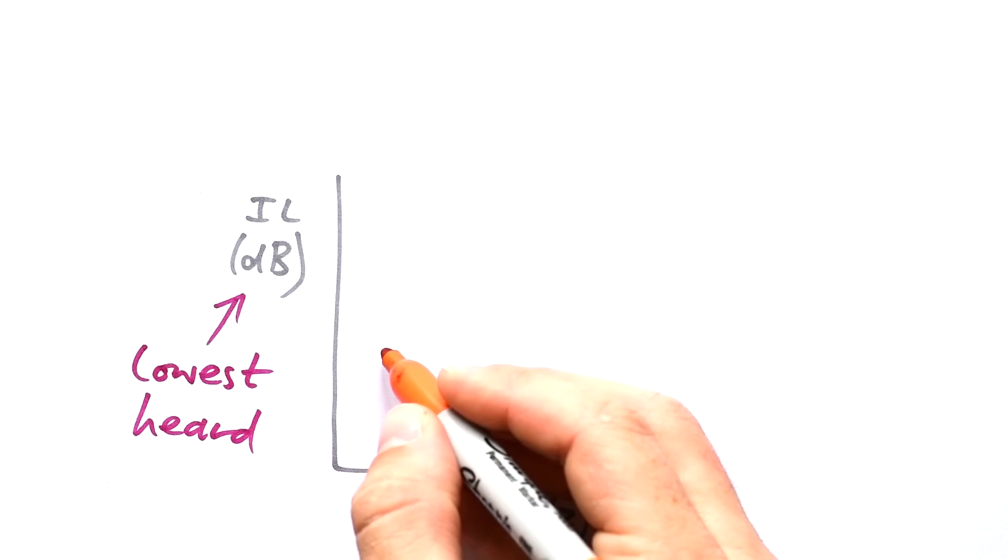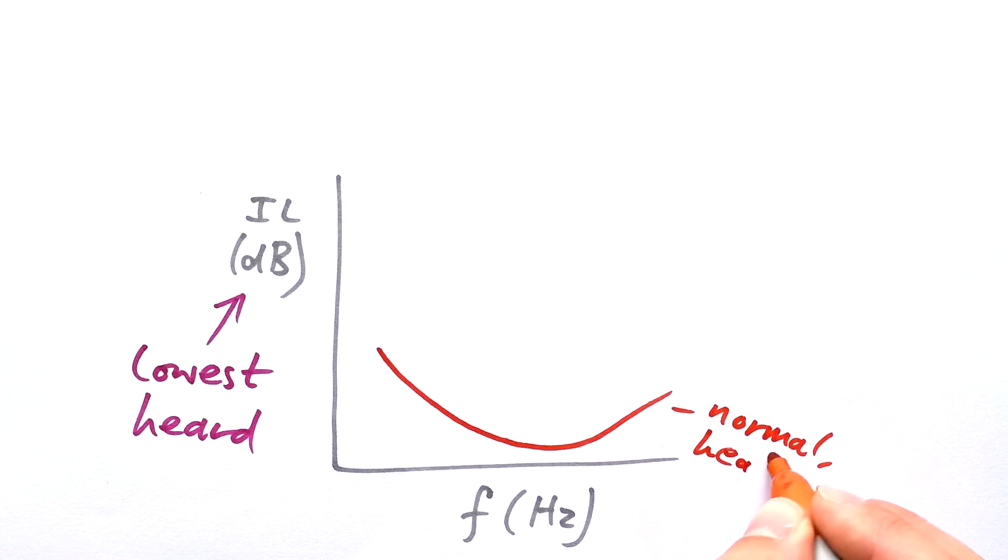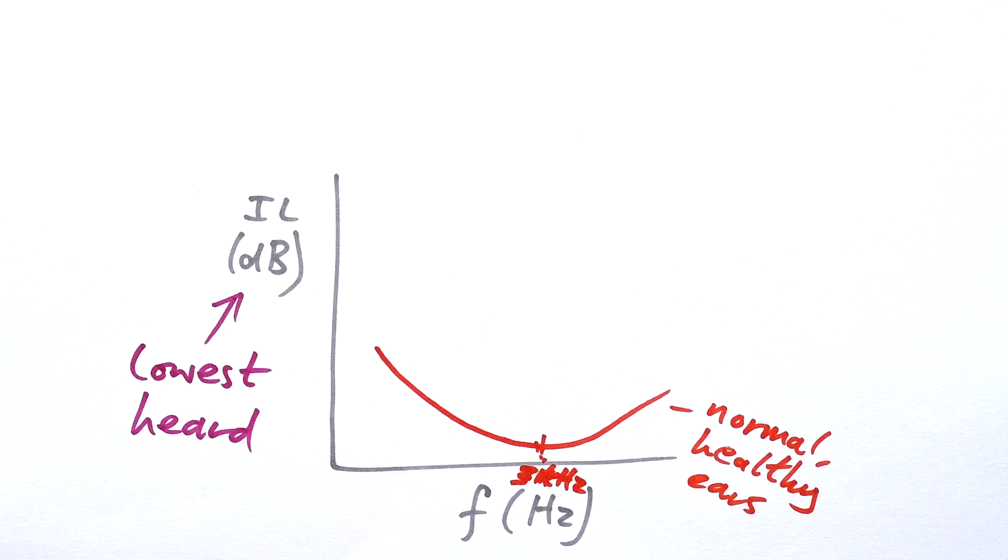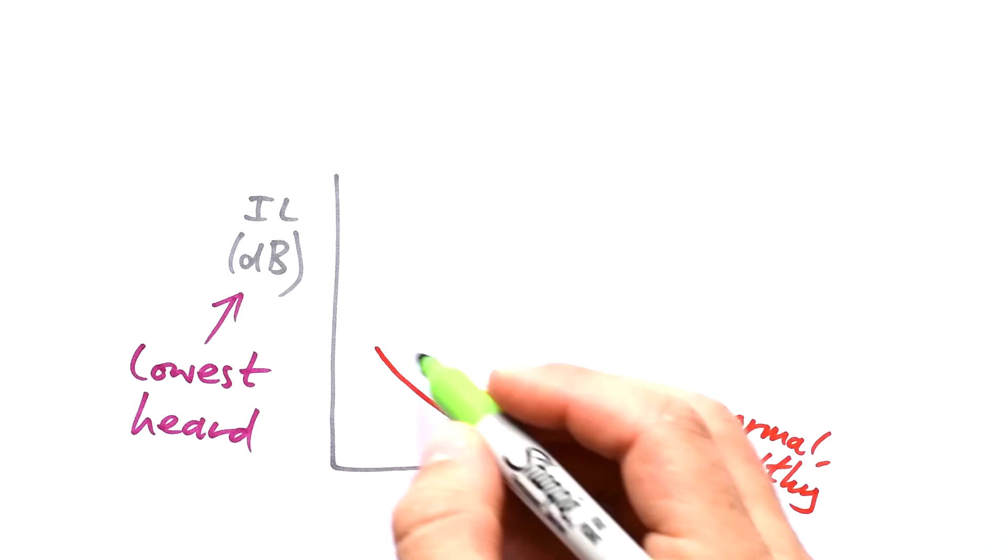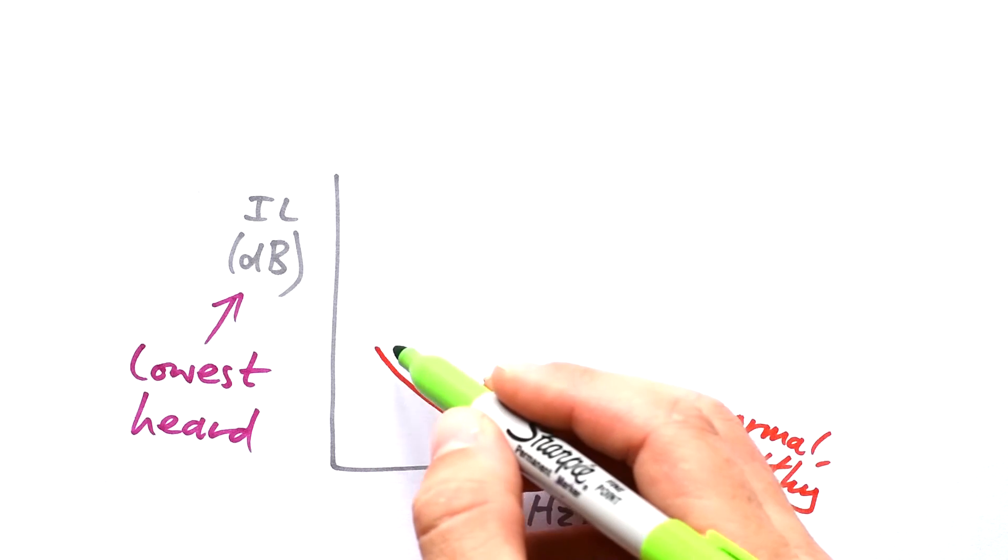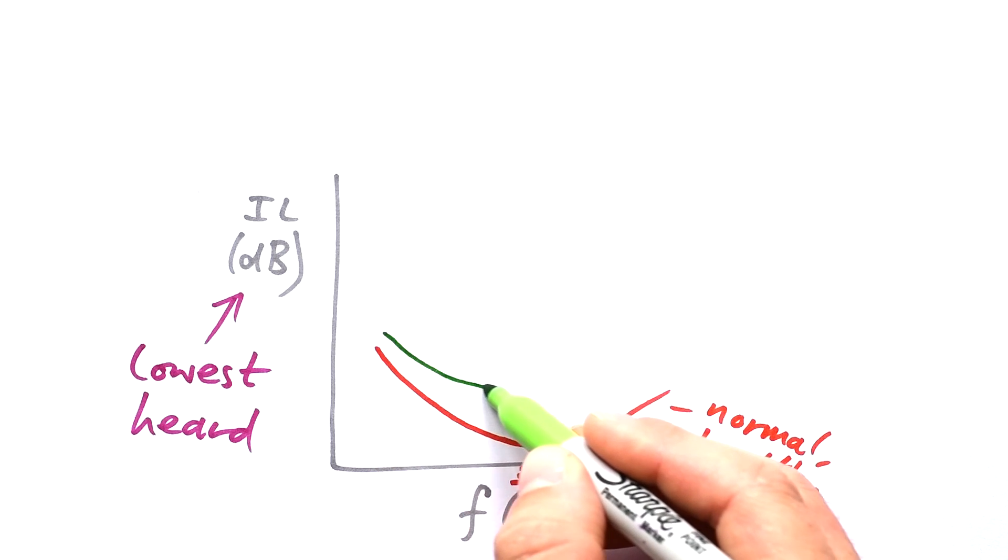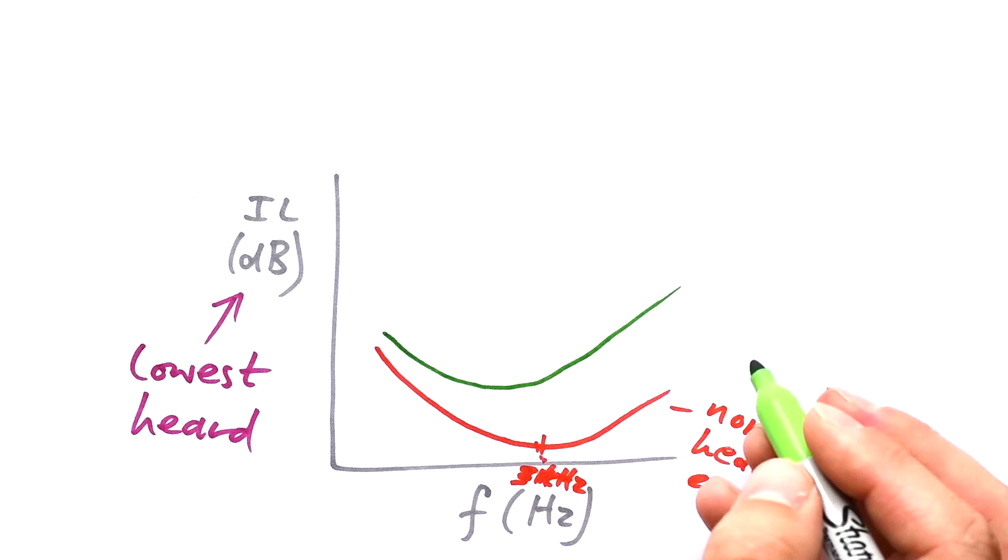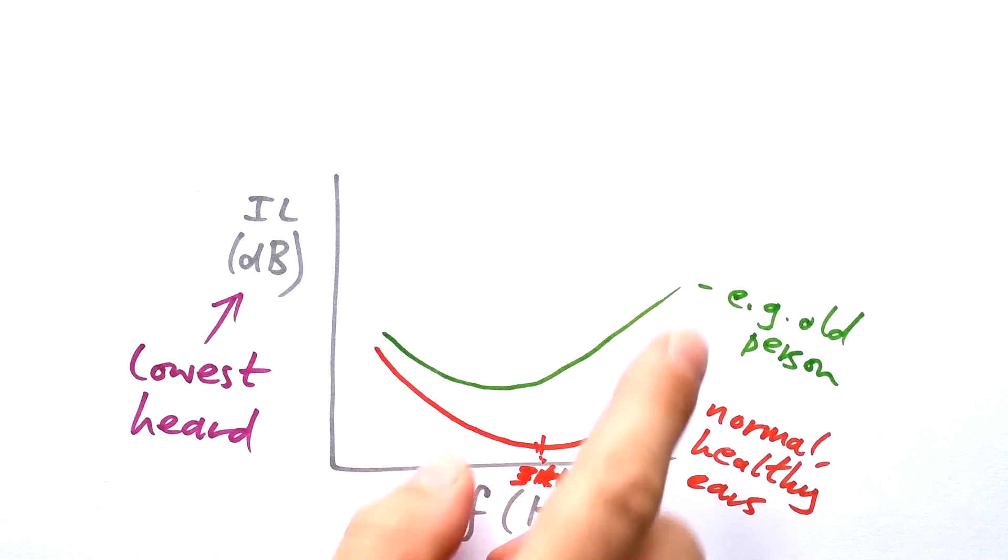So what you'll find is that for someone with normal healthy ears, we said that it's most sensitive at about 3 kilohertz, that's when you can hear the lowest intensity level. But then somebody who's maybe slightly older, what you'll find is that generally all frequencies are affected, but especially higher frequencies, and so they can only hear very high intensity level sounds at those higher frequencies.